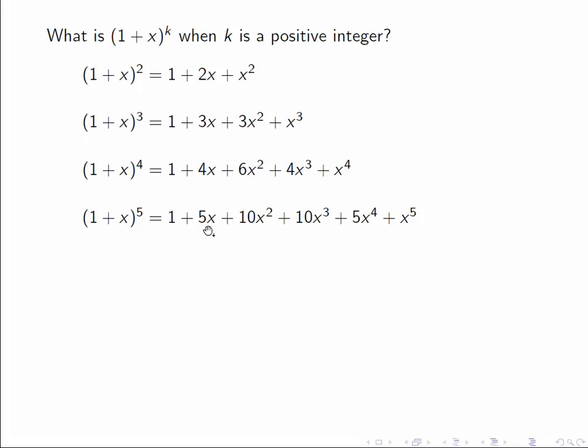But a more important question is where are these coefficients coming from? What are they and how do we calculate them? You may remember that the coefficients come from Pascal's triangle. This last row corresponds to the expansion of (1+x)^4. These numbers are obtained by adding up the two numbers above a given number to the left and right. So 3 is 1+2 and 4 is 1+3.